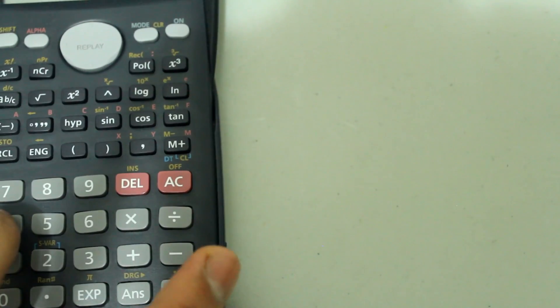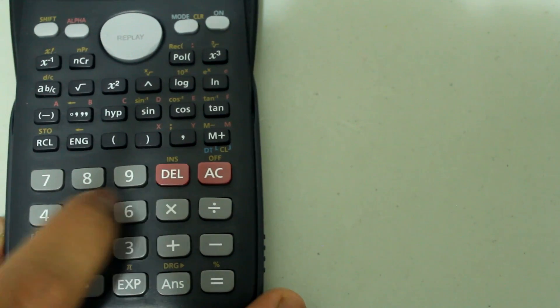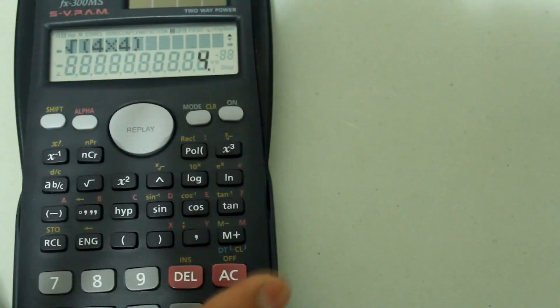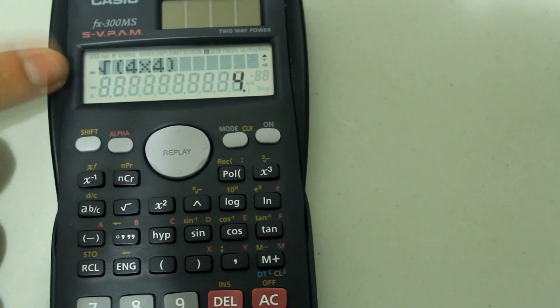times 4, close the parenthesis and then hit enter. 4 times 4 is 16 and the square root of 16 is 4, so we get 4 once again.